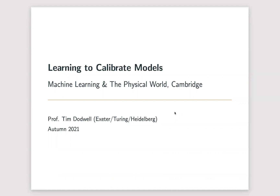It's always a central question: if we want to use models, they have parameters, and often we aren't sure what to pick as those parameters. For toy problems that's not too hard - we can use optimisation, we can use Bayesian inverse methods - but when you go out in the real world, this can be a really challenging problem.